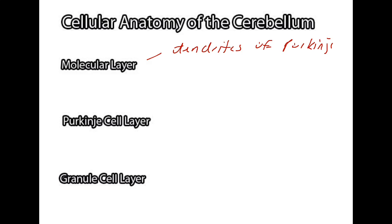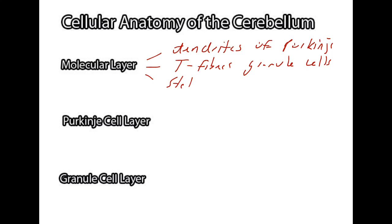The molecular layer also contains the axons, or information-sending portion, of granule cells, and those axons are known as T-fibers. There are also several interneurons that help modulate all this activity, known as stellate and basket cells.